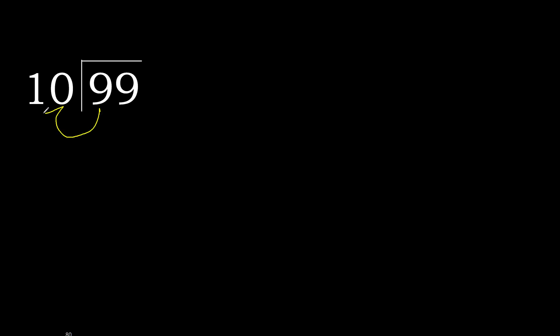99 divided by 10. 9 is less, therefore next. 99 is not less, therefore with 99: 10 multiplied by which number is nearest to 99 but not greater? 10 multiplied by 9 is 90, which is not greater.